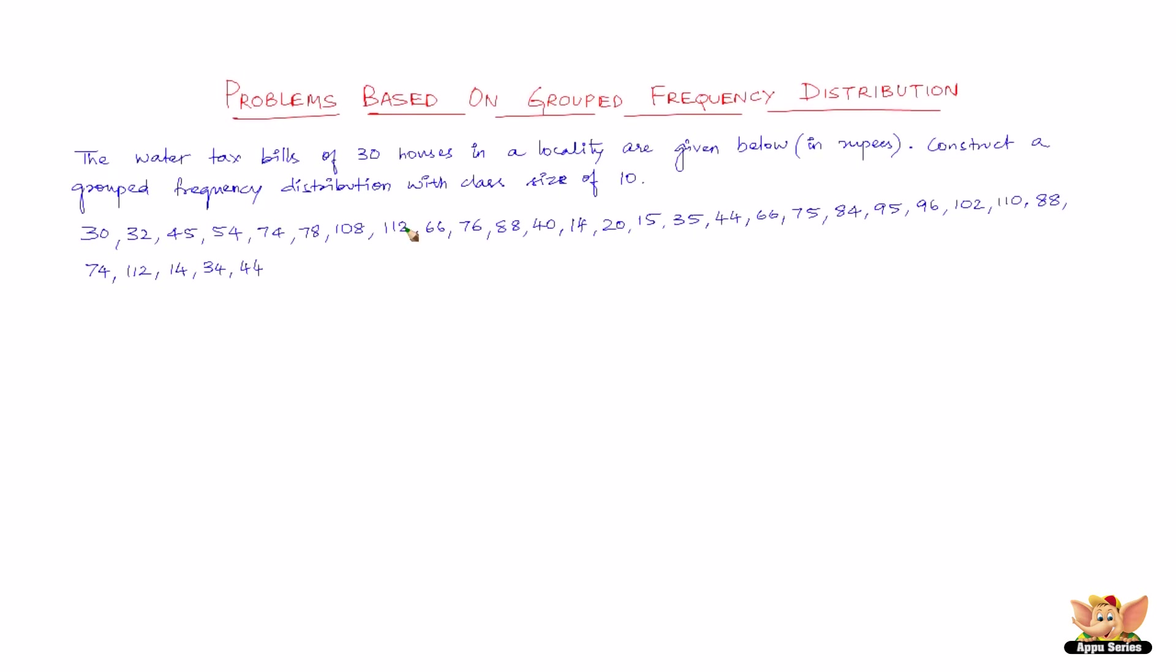Now here is the data, that is the water tax bills of 30 houses. Now here the maximum and minimum values of the variate are 112 - 112 is the maximum - and 14 respectively. The 14 is the minimum value.